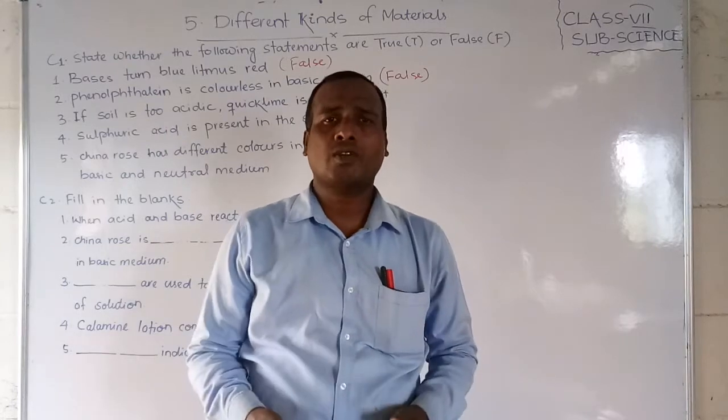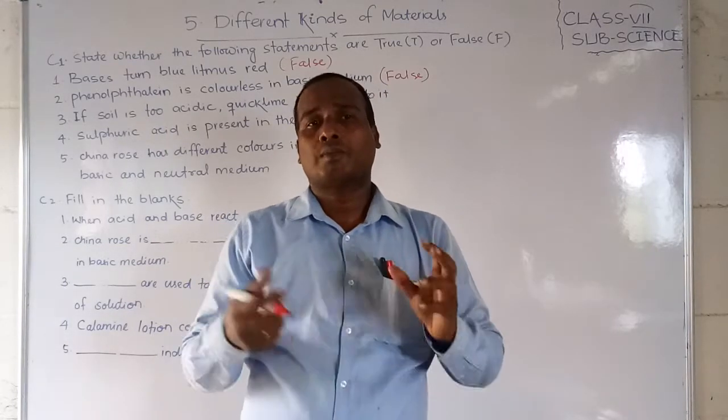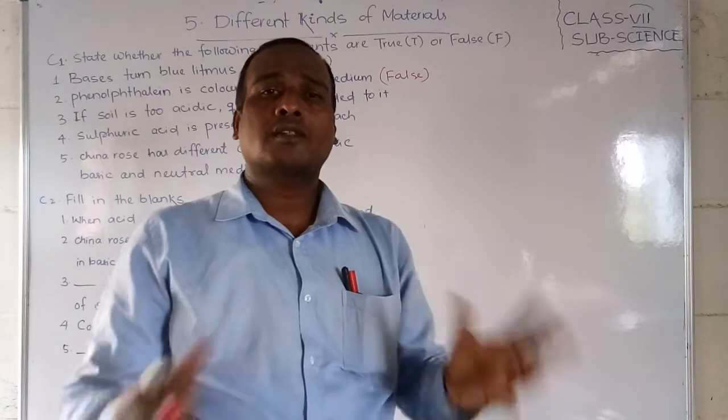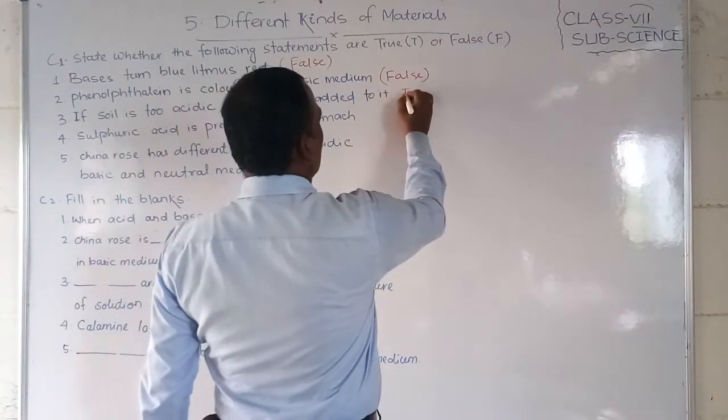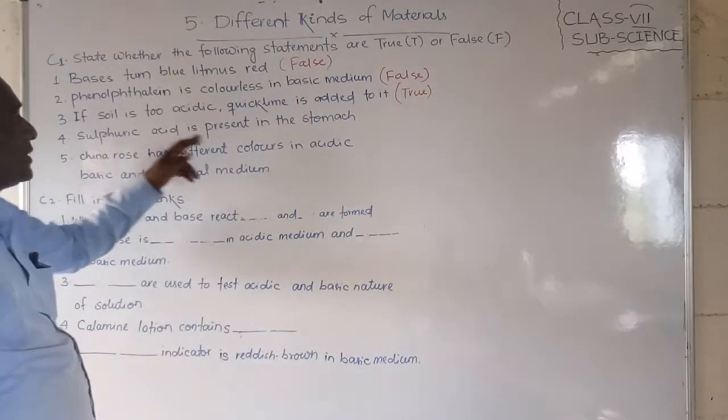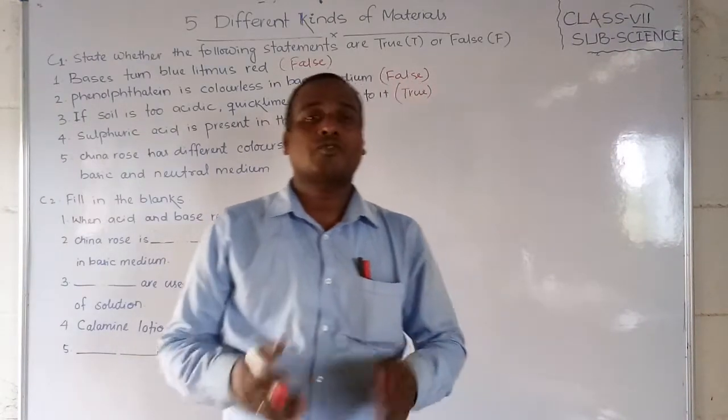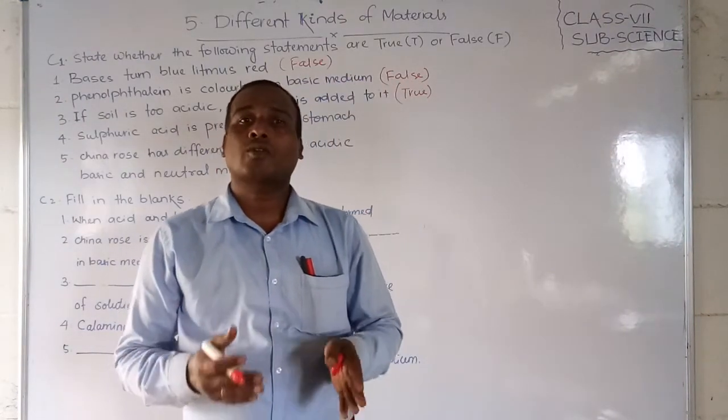If soil is too acidic, quicklime is added to it. If your soil is acidic, more acid is there, so what substance do you add? A basic substance, that is quicklime. If quicklime is a base, this happens. If you add it, then the soil will become neutral, so it is true.